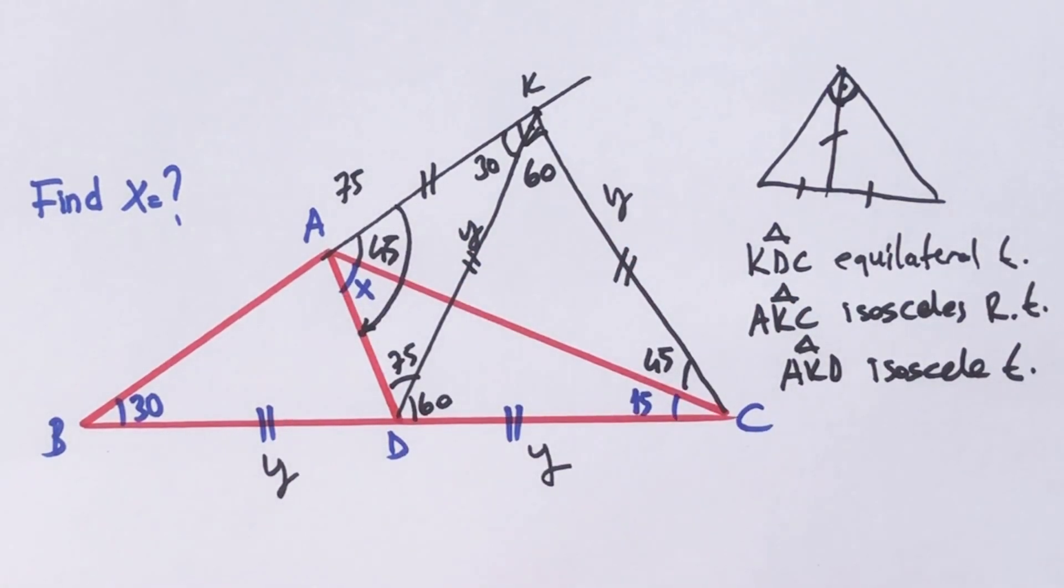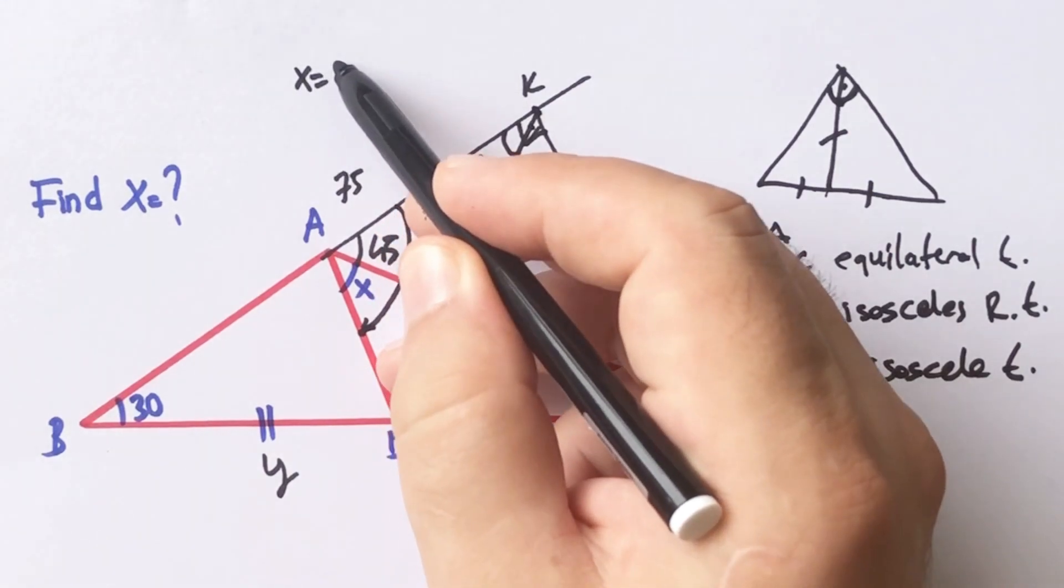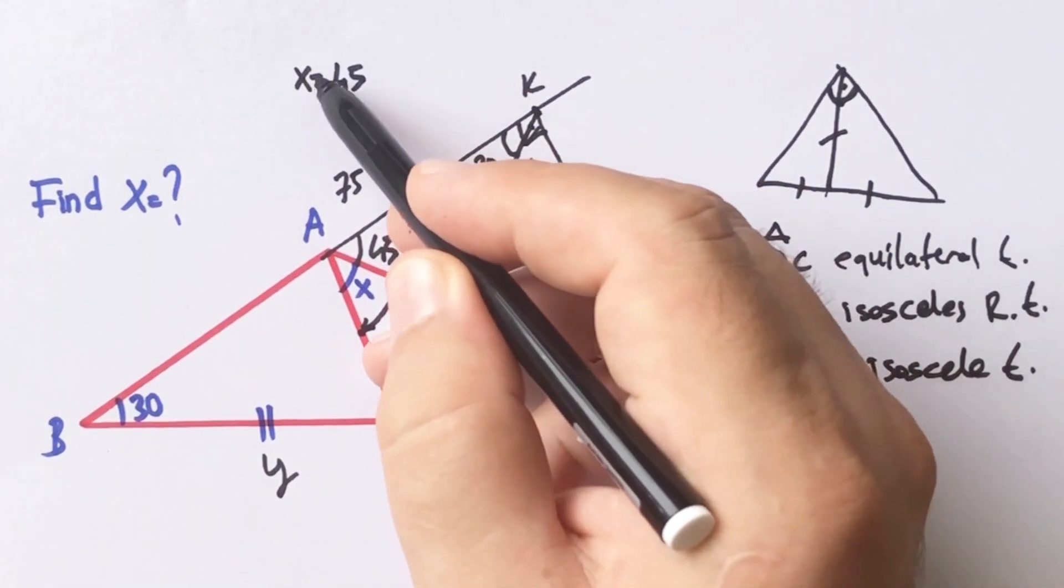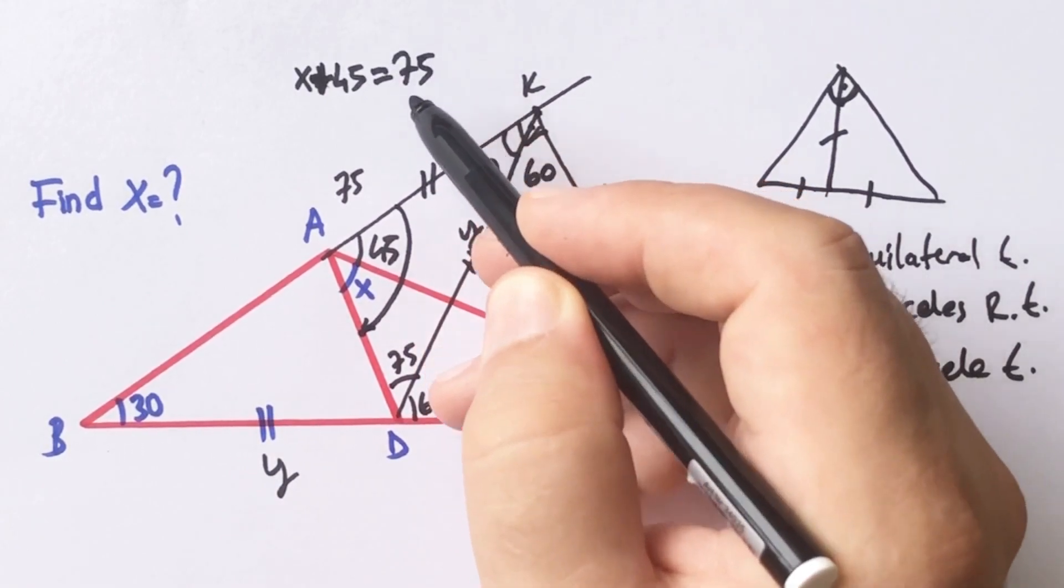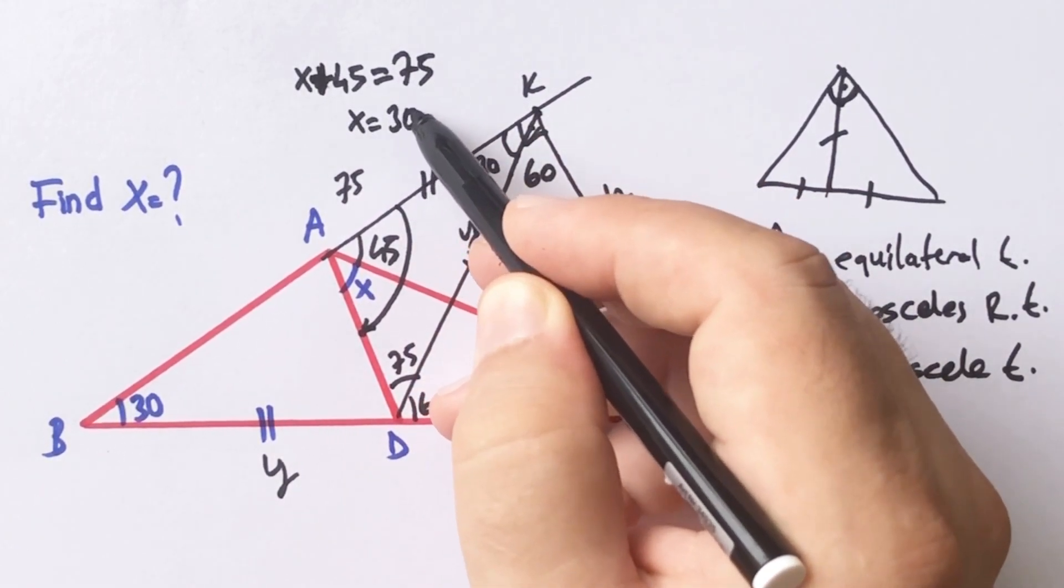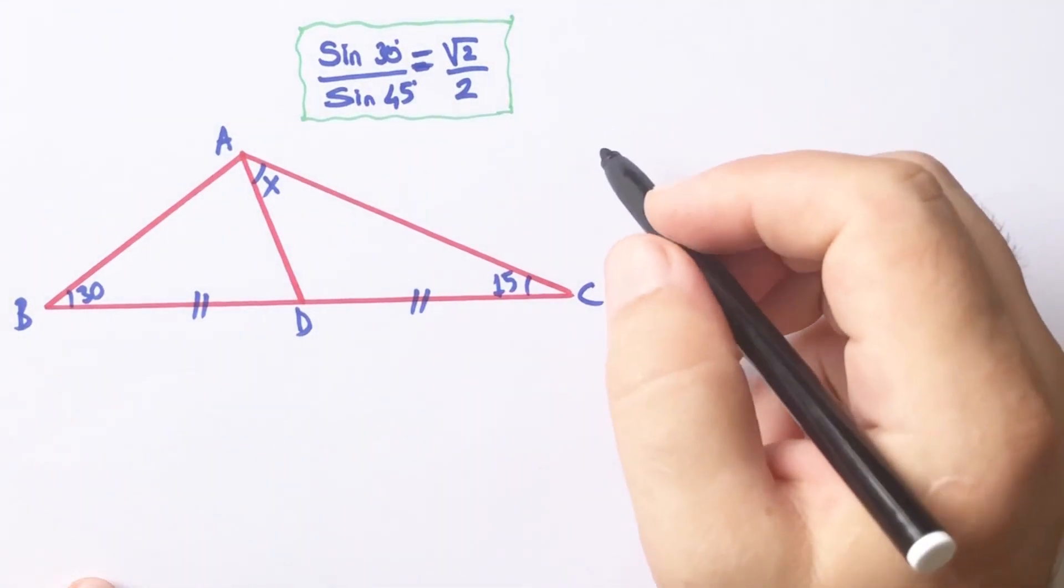Therefore x plus 45 degrees equals 75. So x equals 30 degrees. Okay, this was the first method.